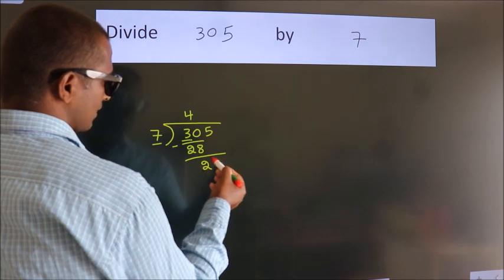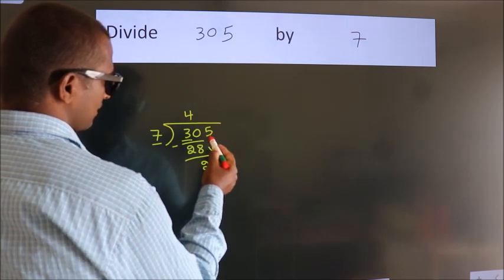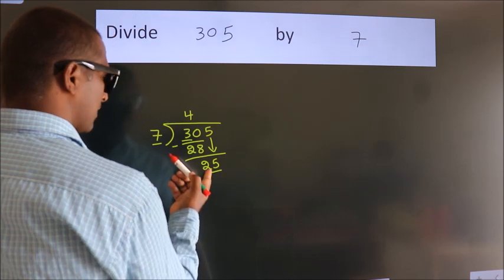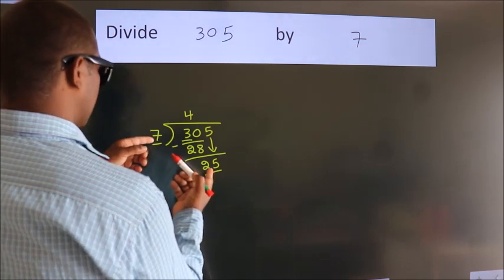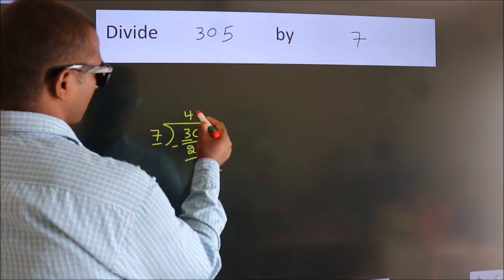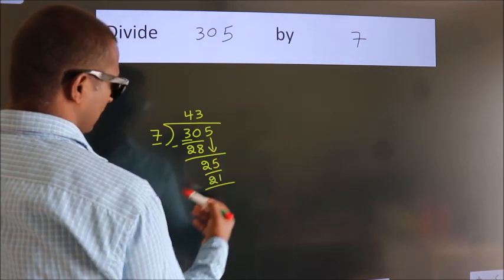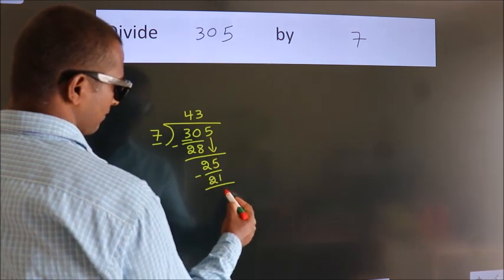After this, bring down the next number. So 5 comes down, giving us 25. A number close to 25 in the 7 table is 7 threes, 21. Now we subtract and get 4.